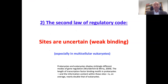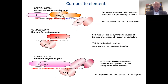So the second law I want to lay out is that binding sites are uncertain — big, weak binding with uncertainty especially true for eukaryotic organisms. Since binding is so uncertain, there are many facts showing that transcription factors do not bind alone; they cooperate with each other. This was demonstrated and started to be collected in a database called COMPEL by Olga Kel-Margoulis. We found many examples where various transcription factors bind to neighboring sites, cooperate, and help each other bind low-affinity sites, leading to synergistic effects.